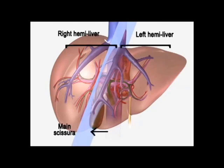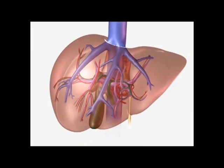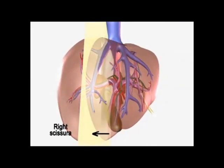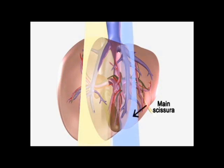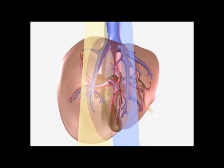The right and left liver, demarcated by this main scissura, are independent in terms of portal and arterial vascularization and of biliary drainage. The right liver is divided into an anterior and posterior sector by the right scissura that runs in the plane of the right hepatic vein. The right portal pedicle, composed of the right hepatic artery, portal vein, and bile duct, splits into an anterior and posterior pedicle that supply the segments of the anterior and posterior sectors.